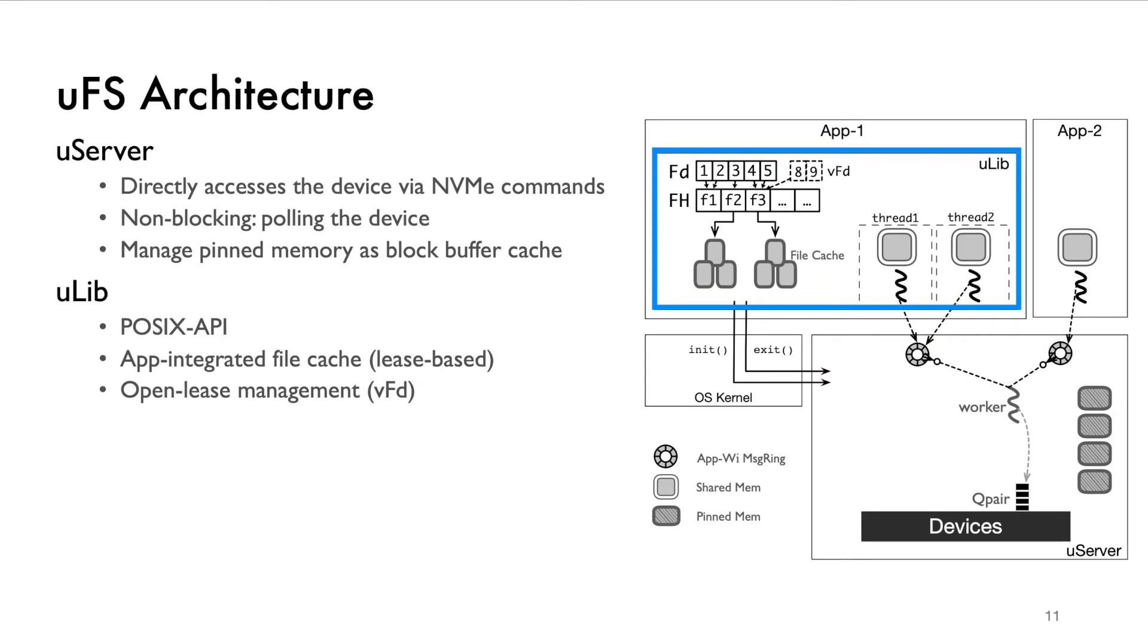All the applications will connect to the file system through ULIB which provides POSIX API support. The library also provides lease-based caching for file content and open files to avoid unnecessary IPC in the reading path.